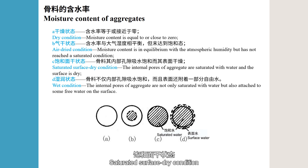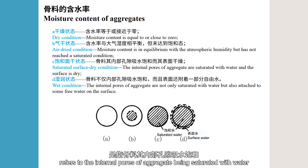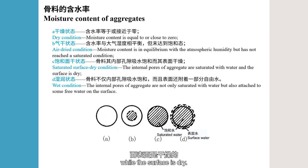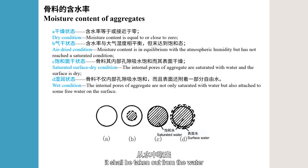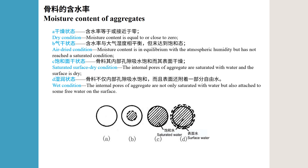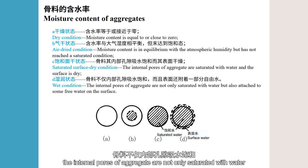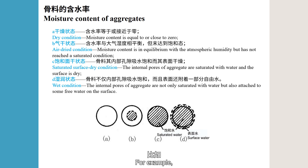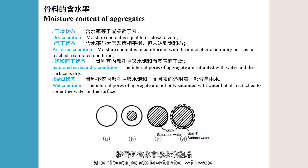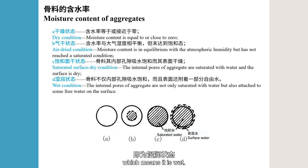Saturated surface dry condition refers to the internal pores of aggregate being saturated with water while the surface is dry. After the aggregate is saturated by absorbing water, it shall be taken out from the water and blotted dry with a wet towel, which is a saturated surface dry condition. The wet condition means that the internal pores of aggregate are not only saturated with water but also have some moisture attached to the surface. For example, after the aggregate is saturated with water and taken out, the surface is rich in moisture, which means it is wet.